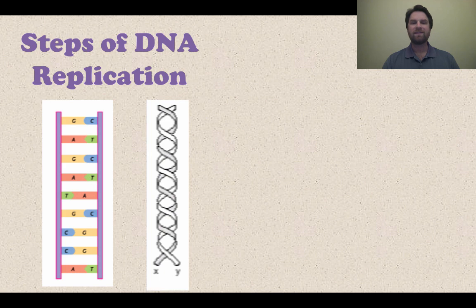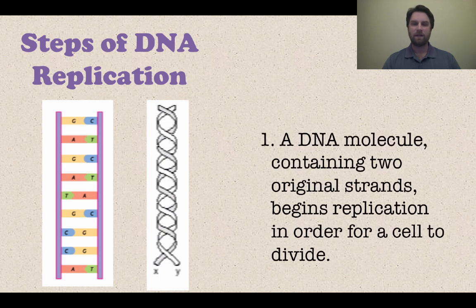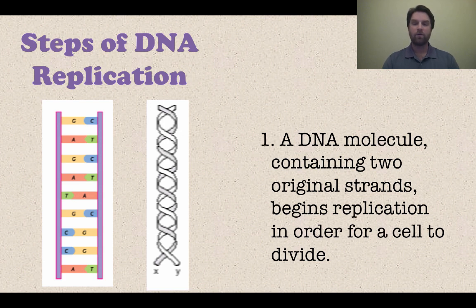So let's look at the steps of DNA replication. The first step: you have a DNA molecule that has two original strands, because we have a double helix — two strands wrapped around each other — and that is what we need to start with in order for the cell to start dividing.